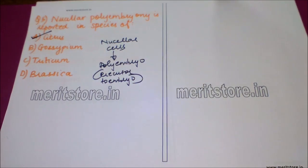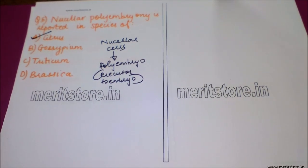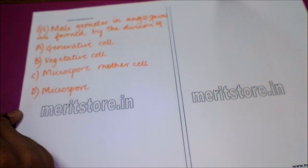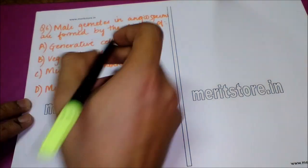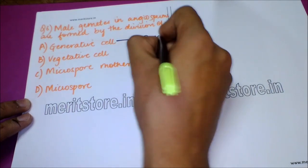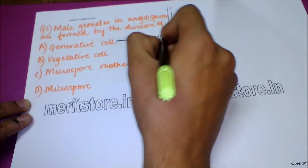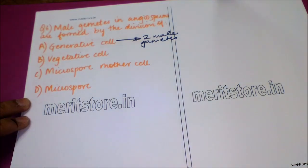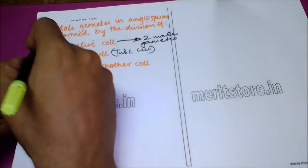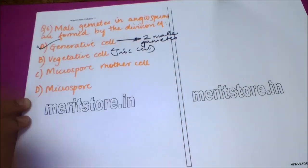The next question is: male gametes in angiosperms are formed by the division of which cell? Option A: generative cell. Option B: vegetative cell. Option C: microspore mother cell. Option D: microspore. The answer is option A — the generative cell — which generates two male gametes as seen in the pollen tube of the male gametophyte. The vegetative cell is the tube cell.